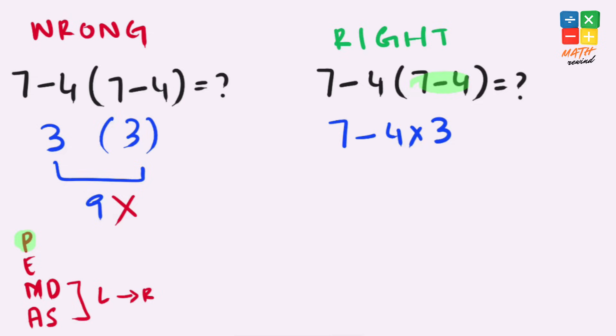So now we have two operations here, subtraction and multiplication. According to the rules, multiplication comes first. So we'll solve this first. 4 times 3 equals 12.